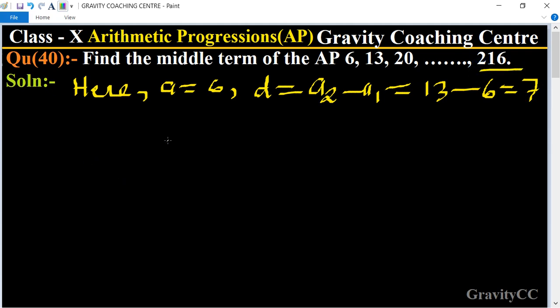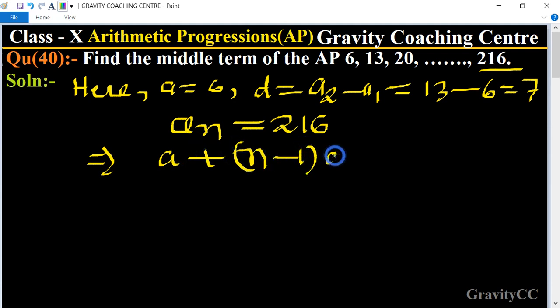And last term is given 216, an equal to 216. And we know that the formula of nth term is a plus n minus 1 times d equal to 216.